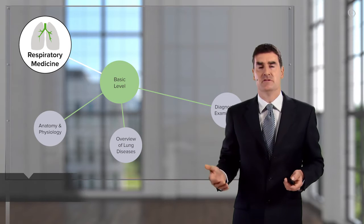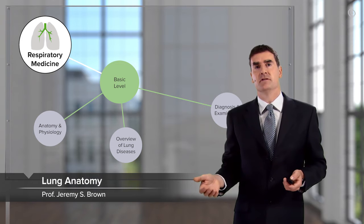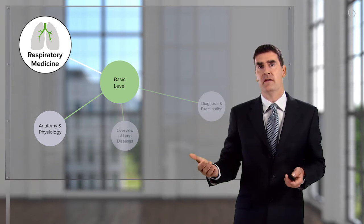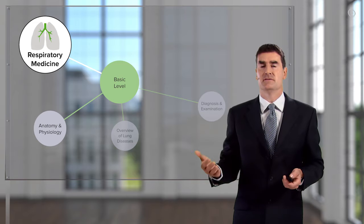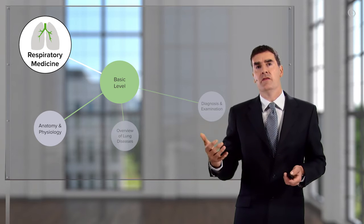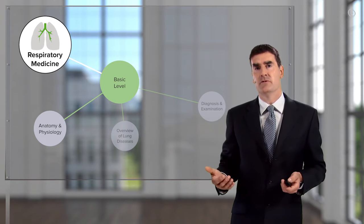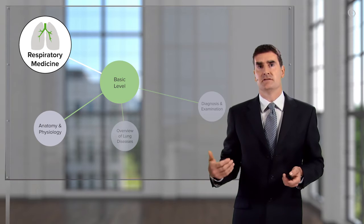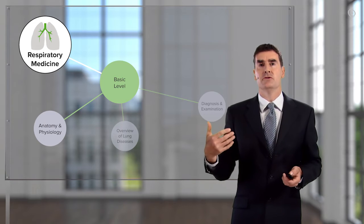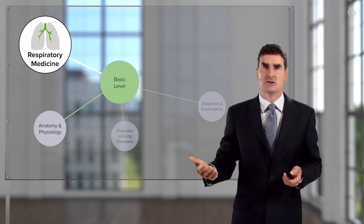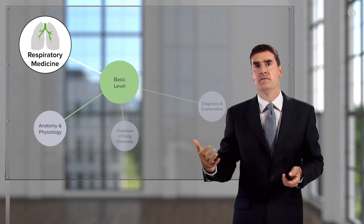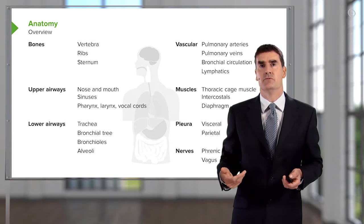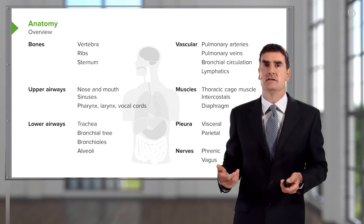In the basic course on respiratory disease, I will discuss first the anatomy of the lung, hoping to show you that the anatomy of the lung is dictated by its function. Then I'll describe the physiology of respiratory function. And then in the subsequent lectures, I'll discuss how the doctor approaches the patient to take a history, examine the patient, and then thinks about and uses diagnostic tests to fully evaluate what the respiratory problem may be that the patient is presenting with.